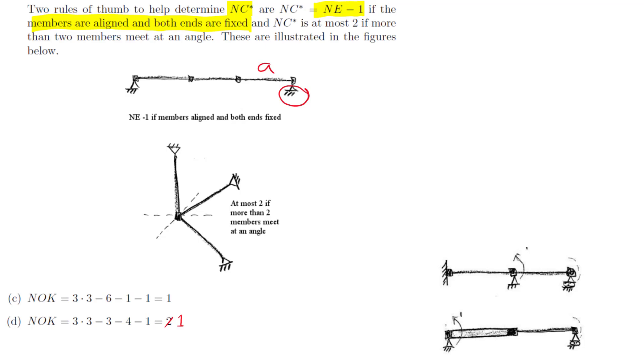The other case is if we have members meeting at an angle. And in this case, NC star is at most two as long as there are more than two such members. Let's look at the example below to get an idea of why that is.